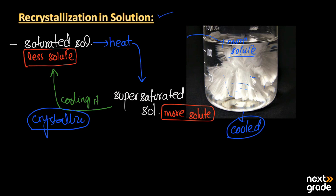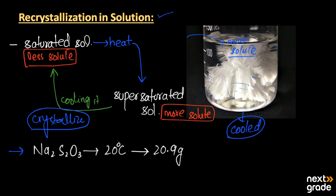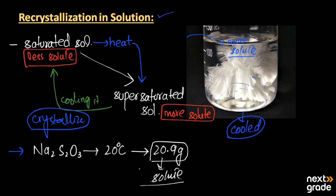For example, we have a saturated solution of sodium thiosulfate — its formula is Na2S2O3. At 20 degrees Celsius, the amount of salt was 20.9 grams. When we increase the temperature, more solute starts to dissolve in it, and the solution converts from saturated to super saturated. When we again decrease the temperature by cooling it, the solution converts back to saturated and crystals of the dissolved solute form in undissolved form. This is the recrystallization process in the super saturated solution.